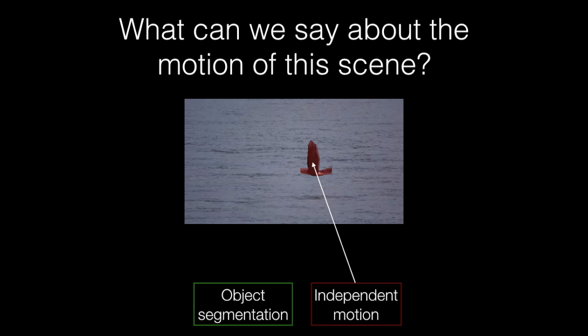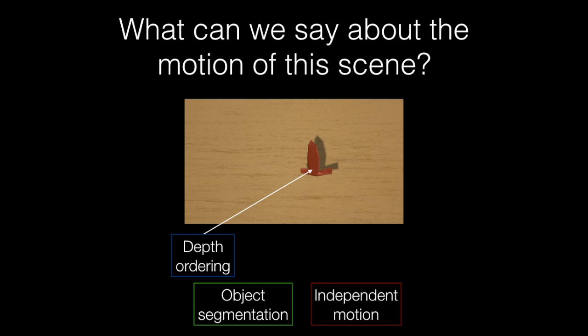We also know that the objects are capable of moving independently. For example, the bird will move independently from the water. We also know the depth ordering. In this case, the bird will be moving in front of the water.